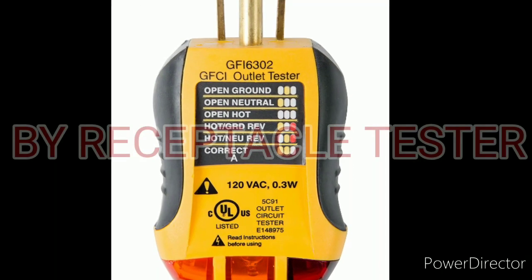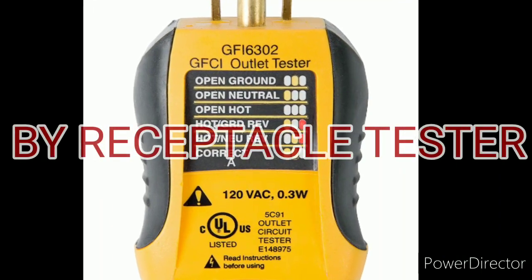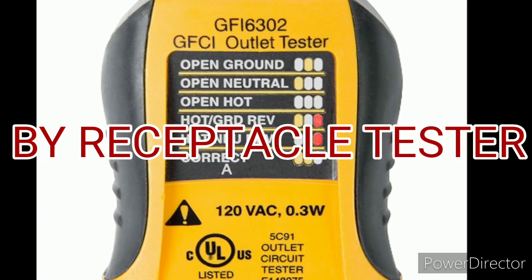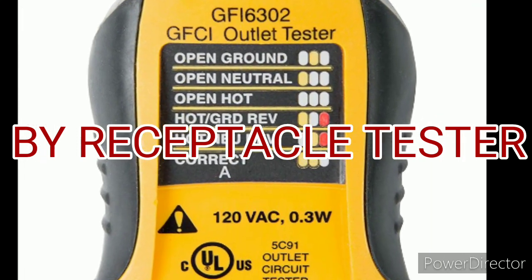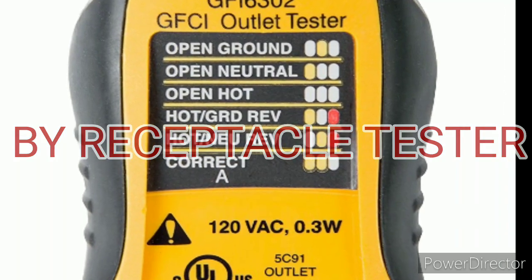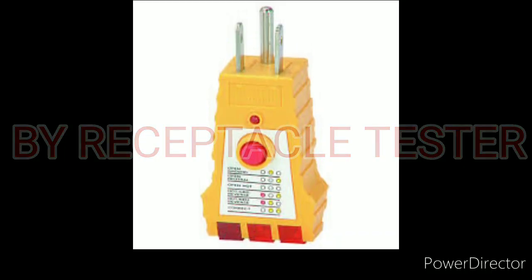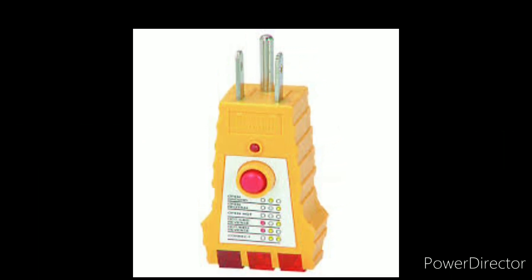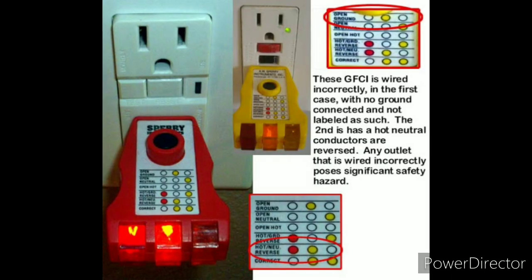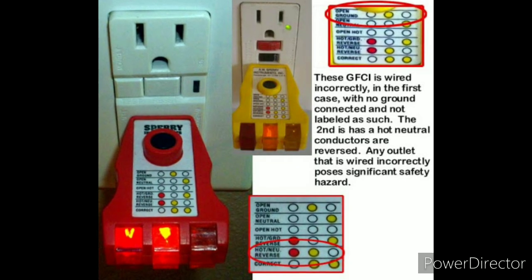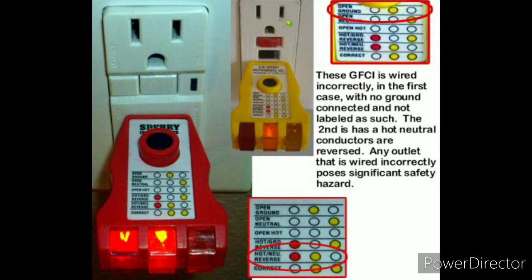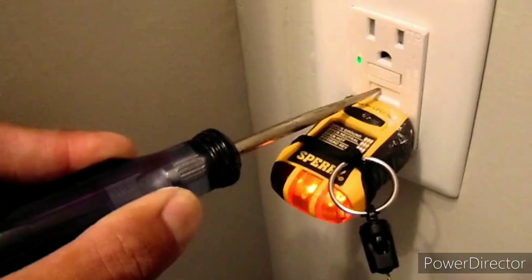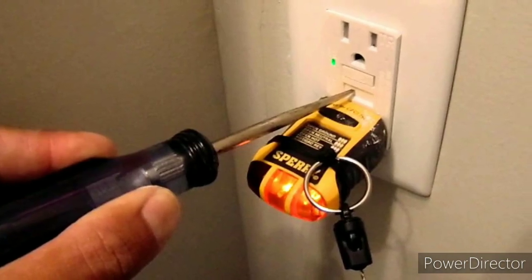The third method uses a receptacle tester — a new intelligent tester. You simply insert the tester into the plug socket and it measures neutral fault, earth fault, and ground fault. Three indicating LEDs show the actual status of the circuit.